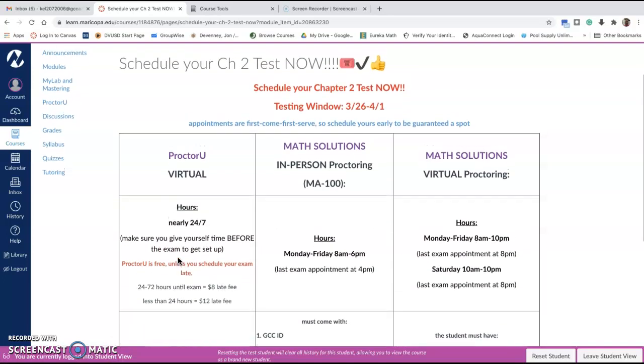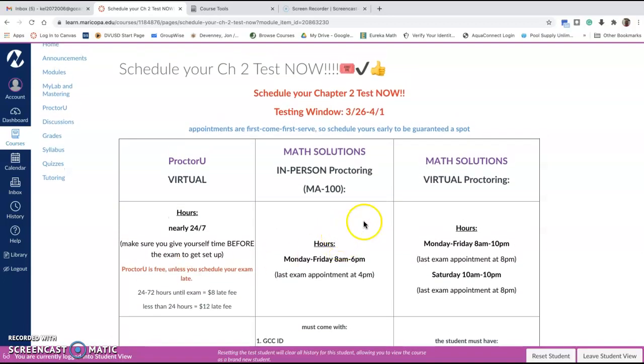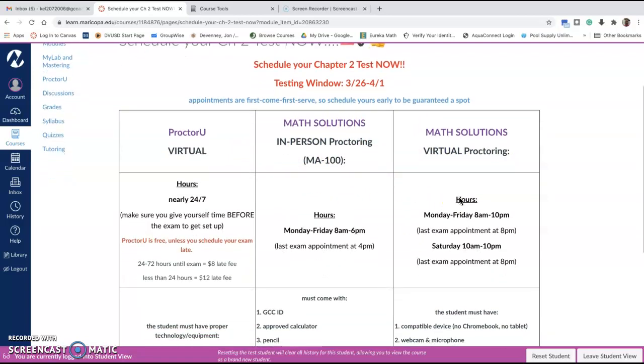The other option you can choose instead of using ProctorU is our own Math Solutions. Math Solutions is offering not only in-person proctoring this semester in MA100 but they're also offering their own virtual proctoring. Either way you have to make an appointment as soon as possible because those services are on a first come first serve basis so you have to schedule it far in advance to get your spot.